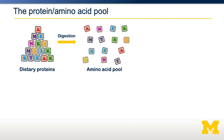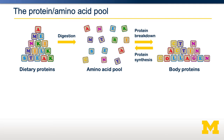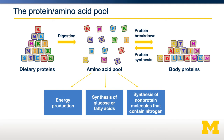This amino acid pool can be used to make new body proteins, or those amino acids can be used to generate ATP or to synthesize glucose or fatty acids. Some amino acids are precursors for other nitrogen-containing compounds, things like serotonin, for example.